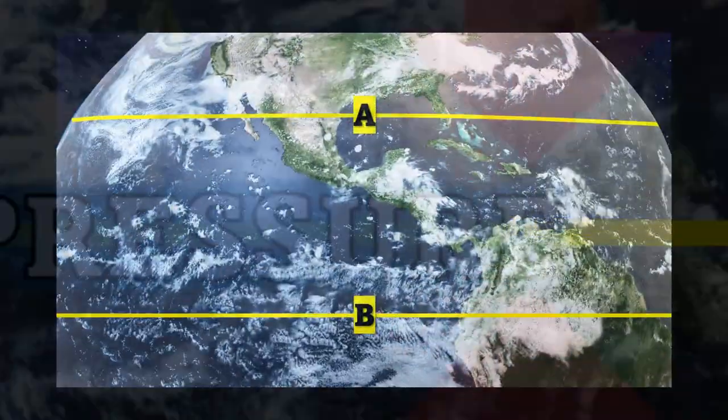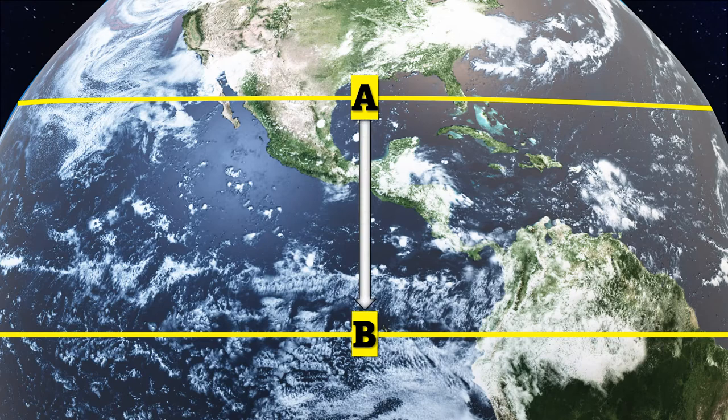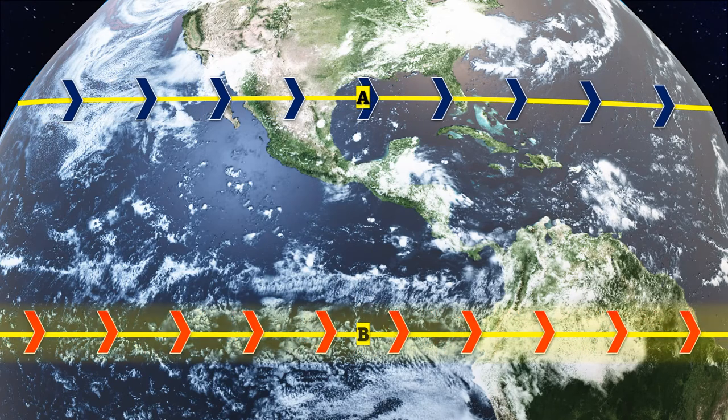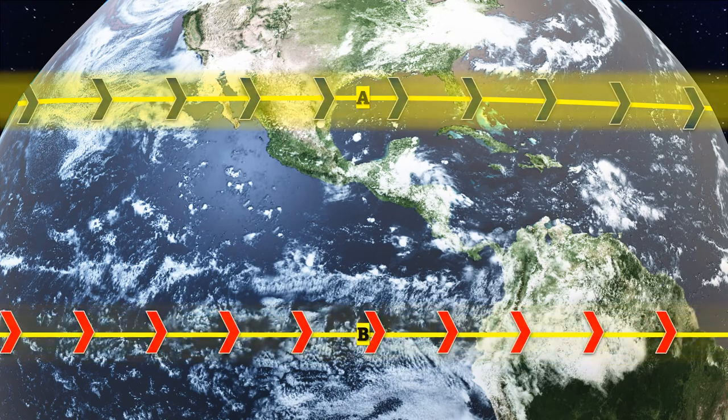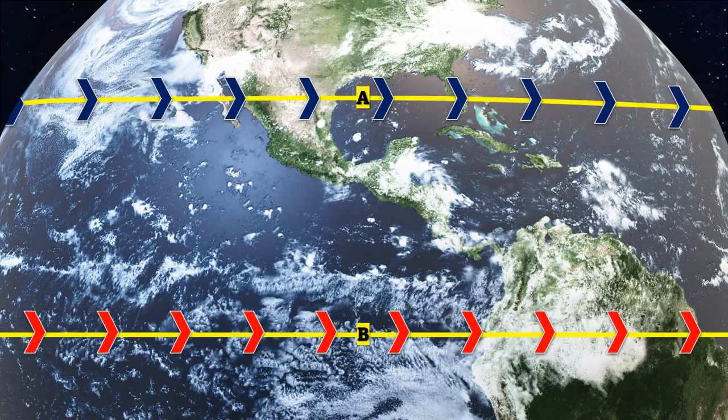If the Earth did not spin, what should the air's trajectory be from point A to point B? A straight line, of course. Assuming the Earth to be a globe, can you see how air along the equator will move faster than air 30 degrees north due to unequal distances along latitudes?